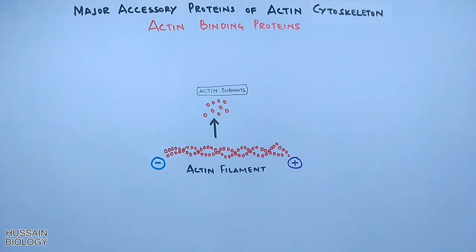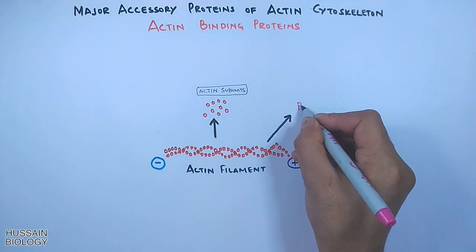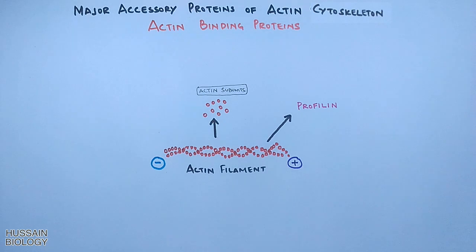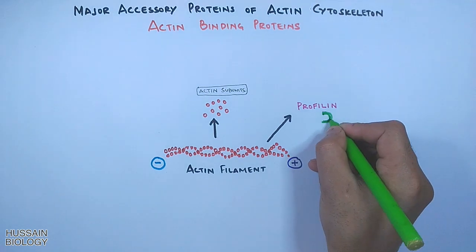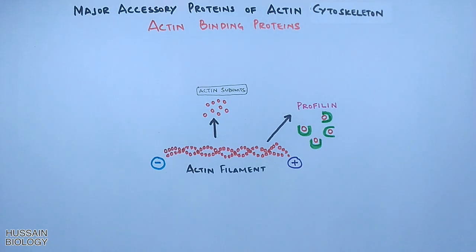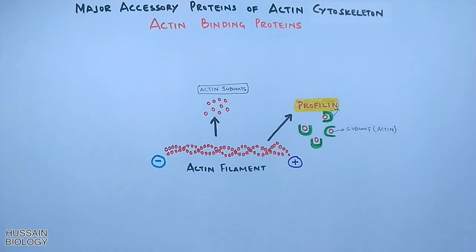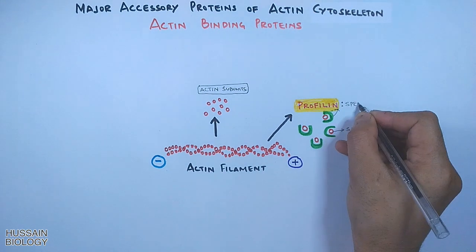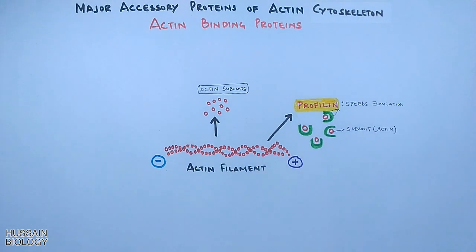Now let's get to the first accessory protein, which is profilin. This profilin protein takes in the actin subunits and adds them to the plus end of the actin filament. So profilin speeds up actin elongation by adding actin subunits towards the plus end, thus growing the actin filament.